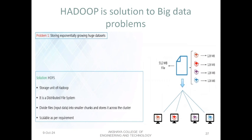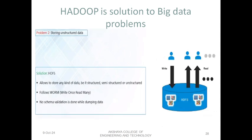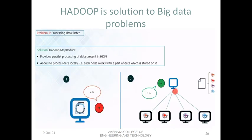How Hadoop solves big data problems: for storing exponentially growing data sets, Hadoop distributes data across multiple devices organized as a cluster. If new data arrives or a larger volume of data comes in, a new node can be added to the cluster. For unstructured data, HDFS follows a write-once, read-many methodology, making it faster. For processing data faster, parallel processing executes tasks across multiple systems where the data is stored, delivering faster results.